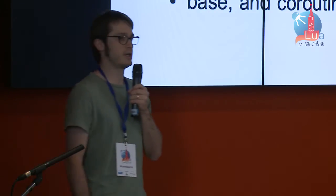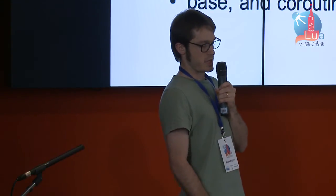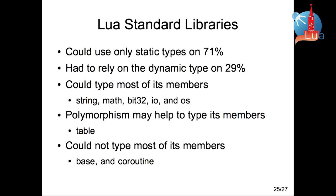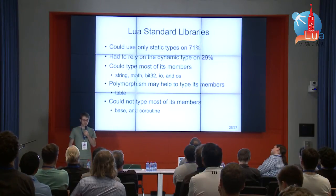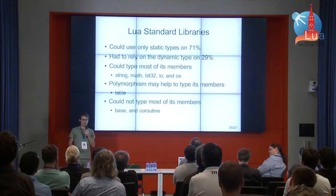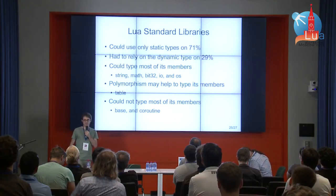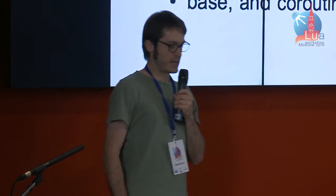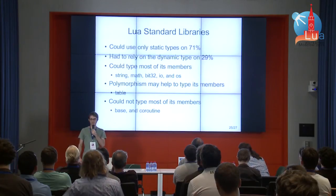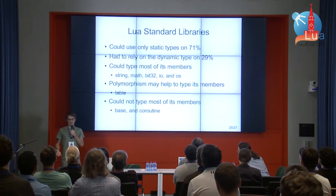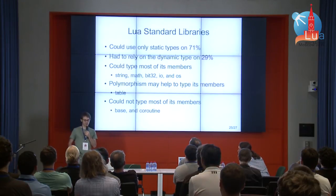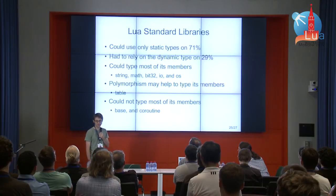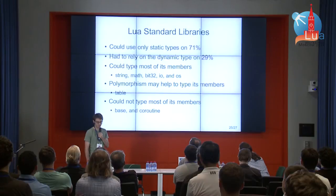Using these description files, I typed the Lua standard libraries. I could use only static types for 71% of its members, but on 29% of its members I had to rely on the dynamic type. The libraries that were relatively easy to type were string, math, bit32, io, and os. The table module was pretty difficult to type because polymorphism is needed and is not present in TypedLua yet. The hardest modules to type were base and coroutine — base mostly because of many dynamic functions like load and getmetatable, and coroutine because we need a special type for coroutines, which TypedLua also does not have yet.